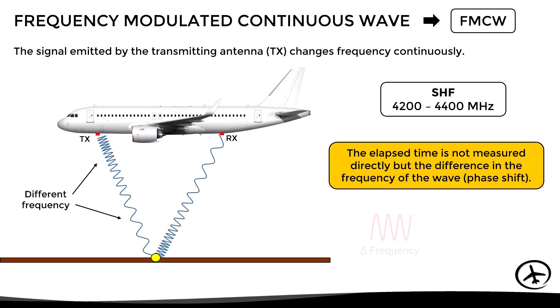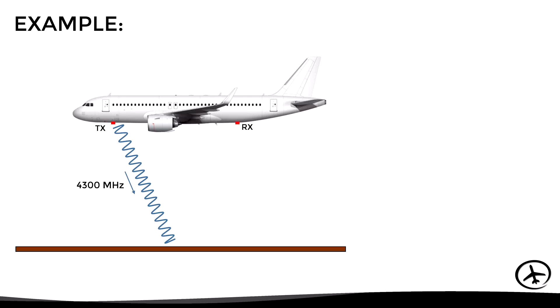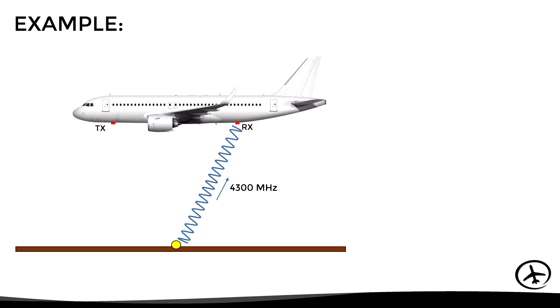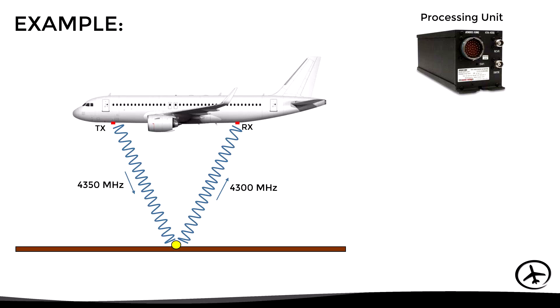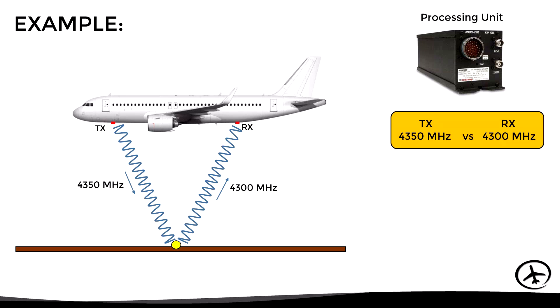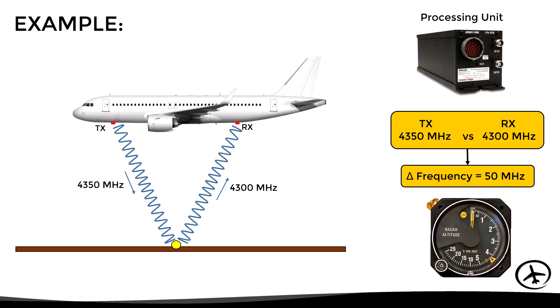And since the rate at which the wave changes frequency is known, the time it takes for the wave to go and return can be determined indirectly. For example, let's suppose the transmitting antenna emits a radio wave with a frequency of 4300 MHz. This wave reaches the surface, bounces back to the aircraft, and is received by the receiving antenna. However, by the time this antenna receives this wave, the transmitting antenna is already emitting another wave with a different frequency — in this case 4350 MHz. What the system does is compare the frequency of the received wave with the frequency of the wave that is being emitted. The difference in frequency between these two waves allows the system to calculate the time it took for the wave to go and return, and therefore also calculate the current height of the aircraft above ground level.